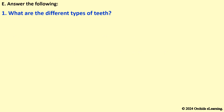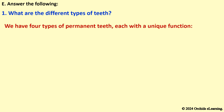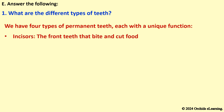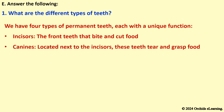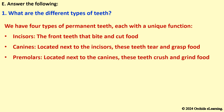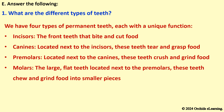What are the different types of teeth? We have four types of permanent teeth, each with a unique function. Incisors: the front teeth that bite and cut food. Canines: located next to the incisors, these teeth tear and grasp food. Premolars: located next to the canines, these teeth crush and grind food. Molars: the large, flat teeth located next to the premolars that chew and grind food into smaller pieces.